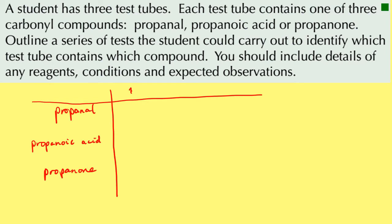For test one, we could take a few drops of each sample and add them to Tollens reagent — or Fehlings or Benedict's. The propanal would give a silver mirror with Tollens, or a brick red precipitate with Fehlings. But no reaction would be seen for the propanone or the propanoic acid. So from test one using Tollens, propanal gives a positive result; propanoic acid and propanone do not react. Now we know the identity of the propanal.